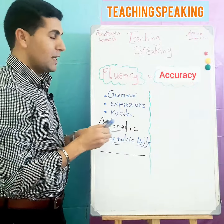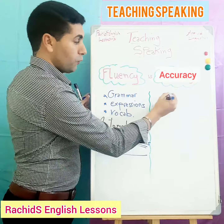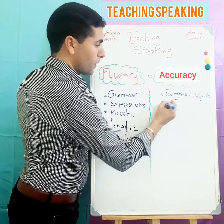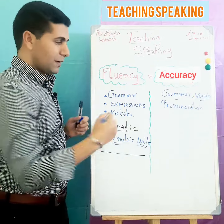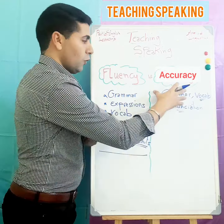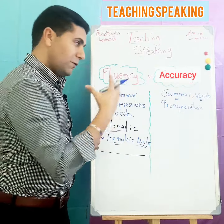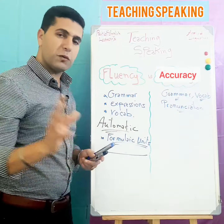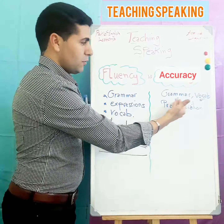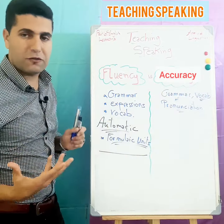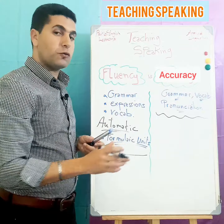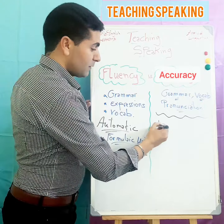Now let's move to accuracy. Accuracy has to do with a very complete mastery of grammar, vocabulary, and pronunciation. If you have mastery of these, we can say a person is accurate. When teaching speaking and focusing on accuracy, students should not make errors or mistakes in grammar, vocabulary or word choice, and pronunciation.